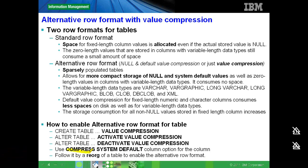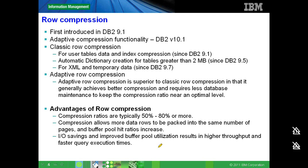Now let's look at the row compression feature. It was first introduced in DB2 9.1 and has been enhanced across various versions. In DB2 9.1, 9.5, and 9.7, we only had classic row compression. In DB2 9.1, we could only compress tables and indexes. In 9.5, we added an automatic distribution equation feature, and in 9.7, we introduced XML and temporary compression.